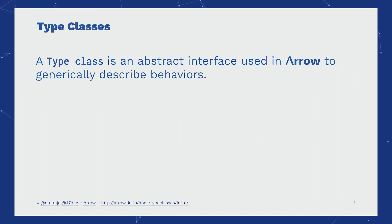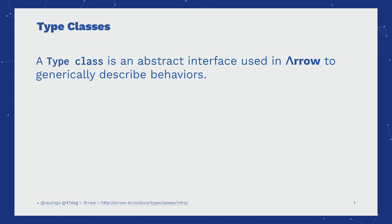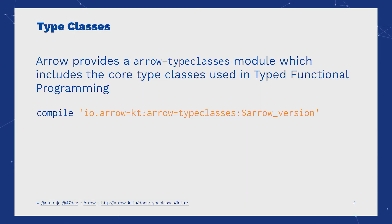A type class is an interface we use to describe abstract behaviors that affect multiple data types. Aero provides most of the fundamental functional programming type classes in the Aero type classes module.